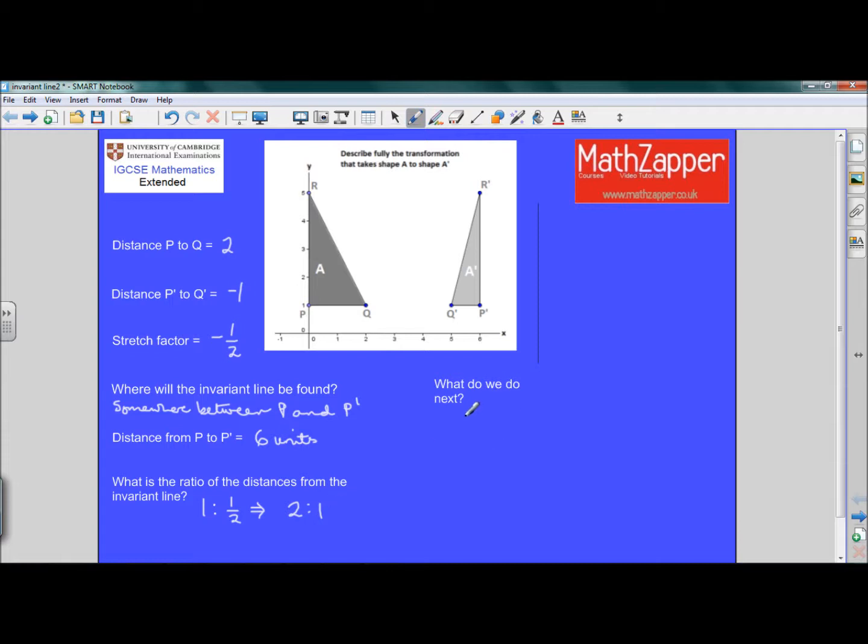So what do we do next? Well, we know that the distance from P to P dash is 6 units, so we can just put that in the ratio 2 to 1, which works out as 4 to 2. We can just take this line over here. So from P to P dash is in the ratio of 4 to 2. So 1, 2, 3, 4.